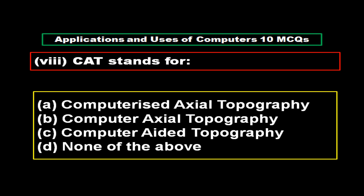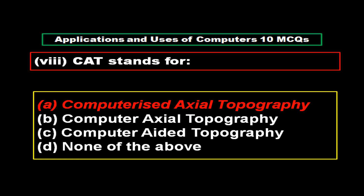CAT stands for: Option A Computerized Axial Topography, Option B Computer Axial Topography, Option C Computer Aided Topography, Option D None of the above. And the right answer is Option A: Computerized Axial Topography.